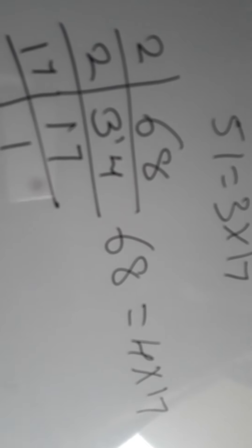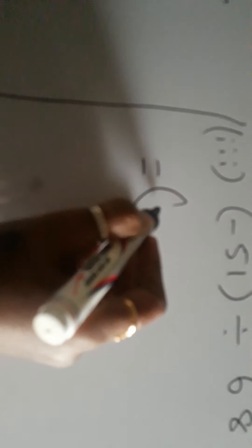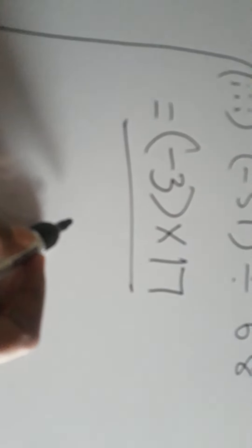So 3 into 17 and 4 into 17. So minus 51 I can put that minus sign for minus 3 into 17 divided by 4 into 17. Did you understand that, children?